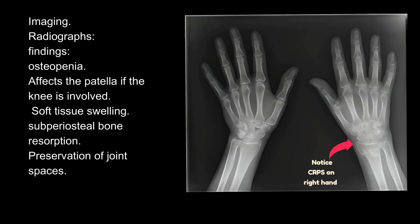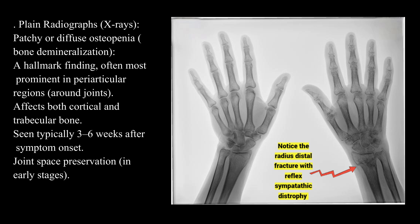Imaging — Radiographs findings: osteopenia affecting the patella if the knee is involved, soft tissue swelling, subperiosteal bone resorption, preservation of joint spaces. Patchy or diffuse osteopenia and bone demineralization are hallmark findings, often most prominent in periarticular regions. Affects both cortical and trabecular bone, seen typically 3 to 6 weeks after symptom onset, with joint space preservation in early stages.